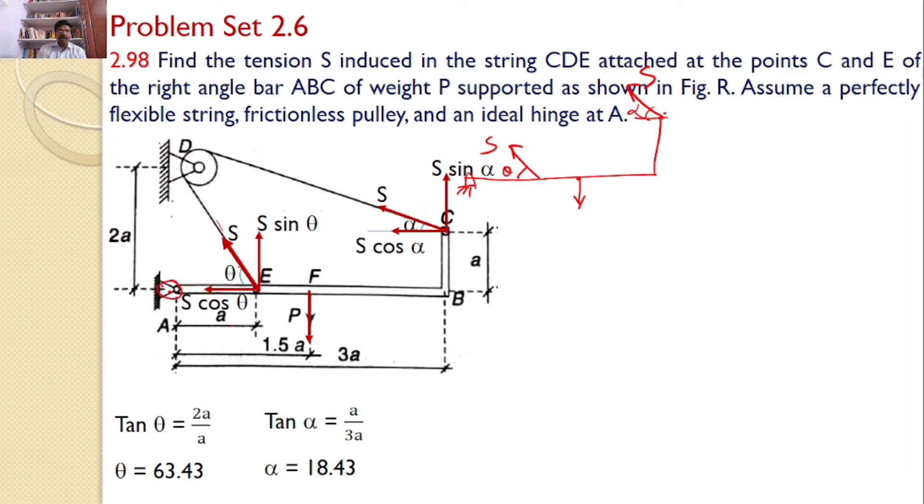Now I will take the moments about point A. So if you take the moments about point A, the reactions developed at A will not need to be considered. S cos theta will also pass through this. This also will not introduce any moment. So S sin theta and S sin alpha only, these two will introduce the moments along with P.